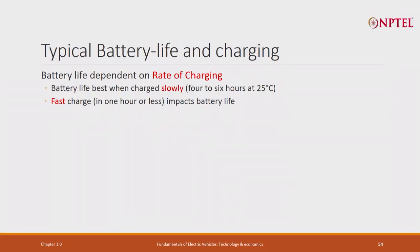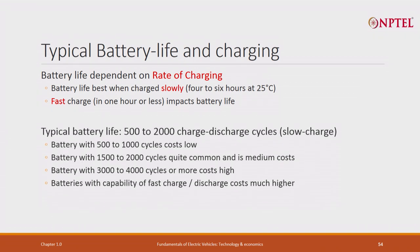Battery life depends on rate of charging: slow charge at 25°C gives best life; fast charging impacts battery life. Typical battery life could be 500 to 2000 cycles. Batteries with 500 to 1000 cycles cost low; 1500 to 2000 are medium cost; 3000 to 4000 cost much higher. Batteries with capability for fast charge also cost higher. This is a simple fundamental fact that everyone must know.